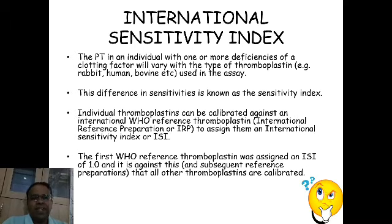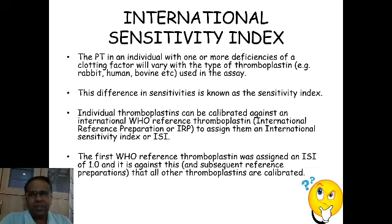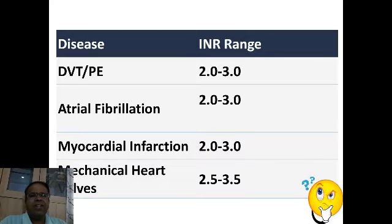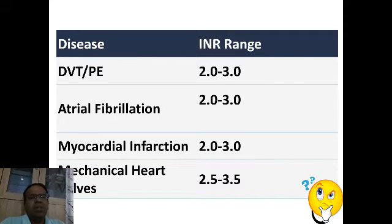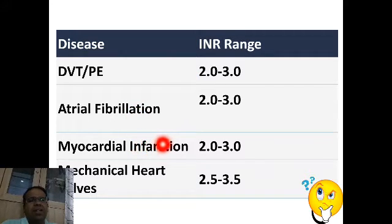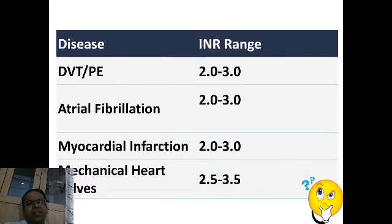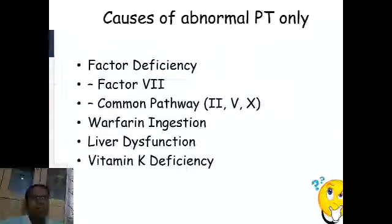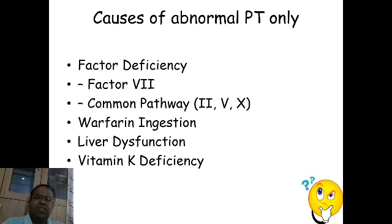INR is recommended to be used only for patients on oral anticoagulants; targets are decided for that purpose only. For other purposes like monitoring liver disease recovery, prothrombin time alone is sufficient. INR should be maintained between 2 to 3 in deep vein thrombosis, pulmonary embolism, atrial fibrillation, and myocardial infarction, but for mechanical heart valves it can be between 2.5 to 3.5.